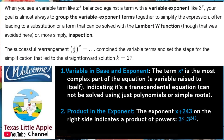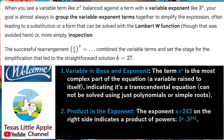Second, product in the exponent: the exponent x plus 243 on the right side indicates a product of powers — 3 to the power of x times 3 to the power of 243.